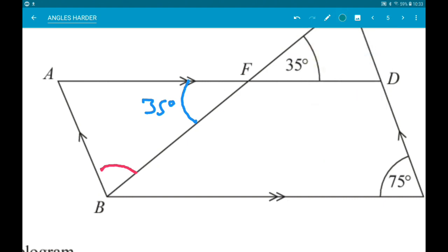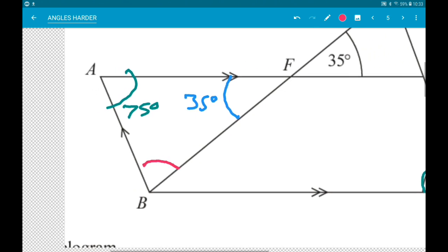Next, opposite angles in parallelograms are equal. So now we are inside a triangle where we know two angles. So we can work out a third.